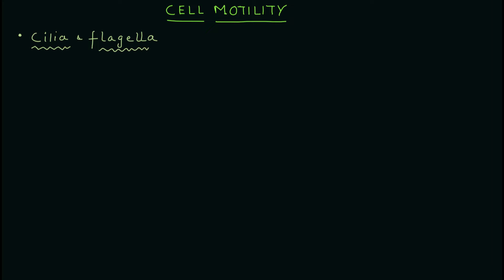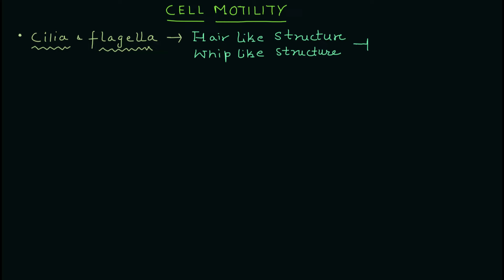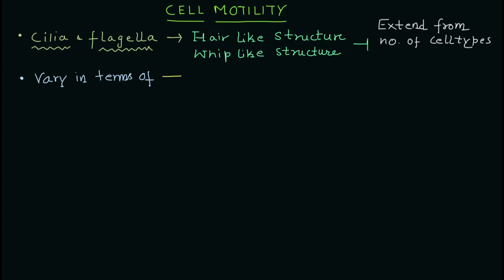With the help of these structures, cells can do various things including cell motility. Their structure is basically similar to hair in our body, and they are also described as whip-like or whip-shaped structures. They extend from many types of cells. Notably, flagellum is present in prokaryotic cells as well, but cilia are completely absent in prokaryotic cells.